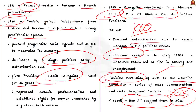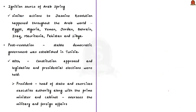The Jasmine Revolution is important because it inspired similar action throughout the Arab world. Pro-democratic protests happened in Egypt, Algeria, Yemen, Jordan, Bahrain, Iraq, Mauritania, Pakistan, and Libya. This series of revolutions and uprisings throughout the Arab world is known as Arab Spring — a most important keyword. The genesis of Arab Spring was in Tunisia through the Jasmine Revolution.